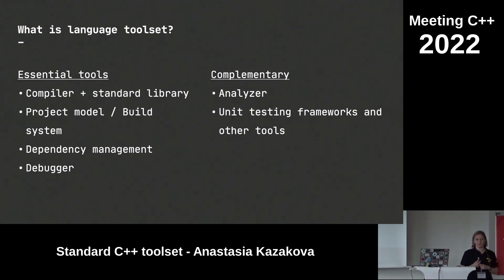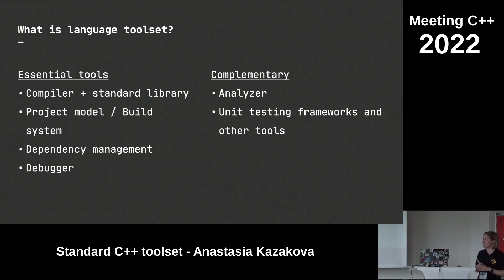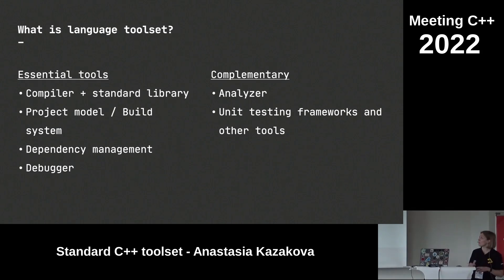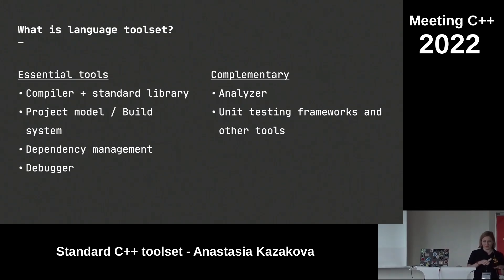Analyzers are complementary tools — you literally don't need them to just build and run or debug the code, but it's better if you have them to run code checks and figure out potential issues. All other tools like unit testing frameworks are very important, but also complementary. That doesn't mean you don't need them — you can survive without them at first, but later you'll still need them.